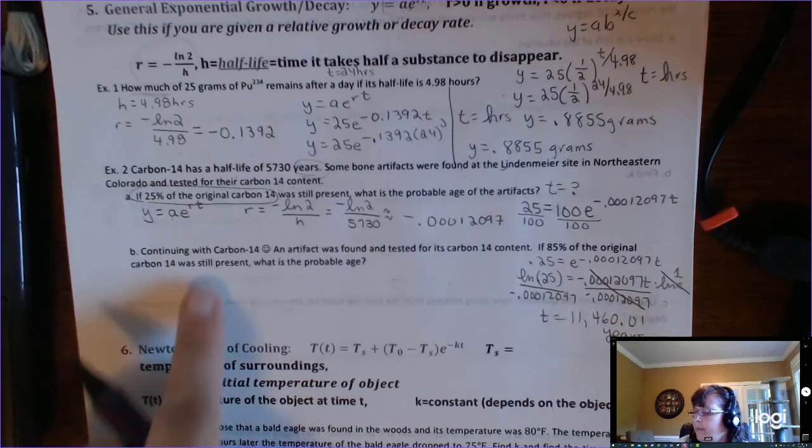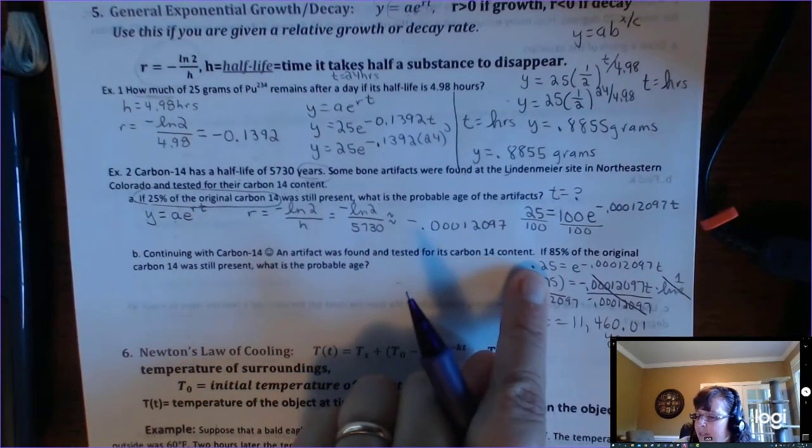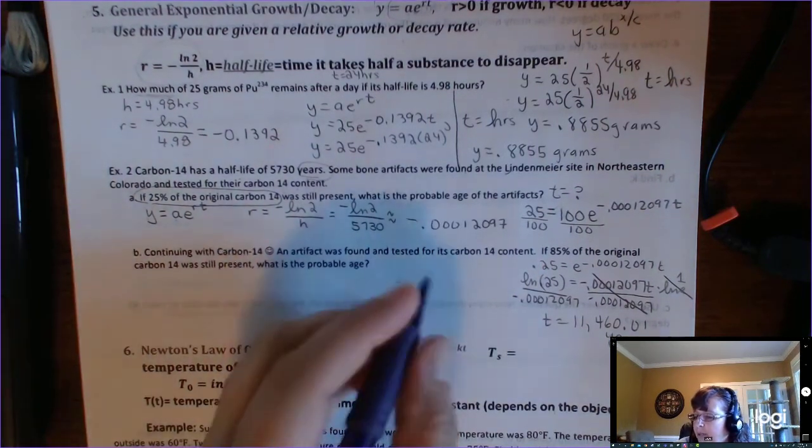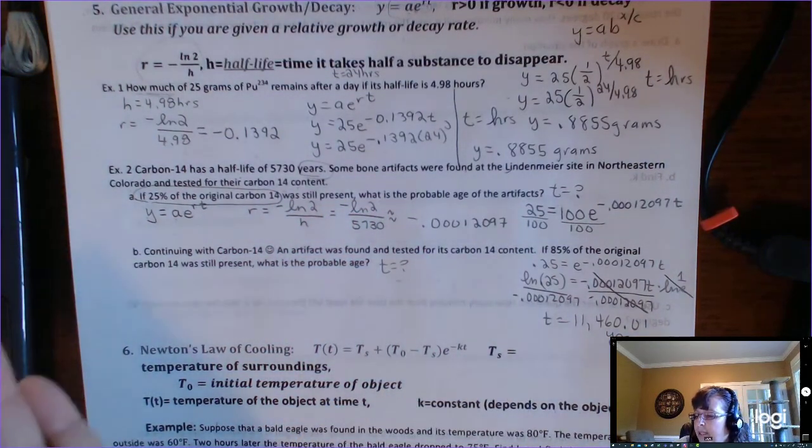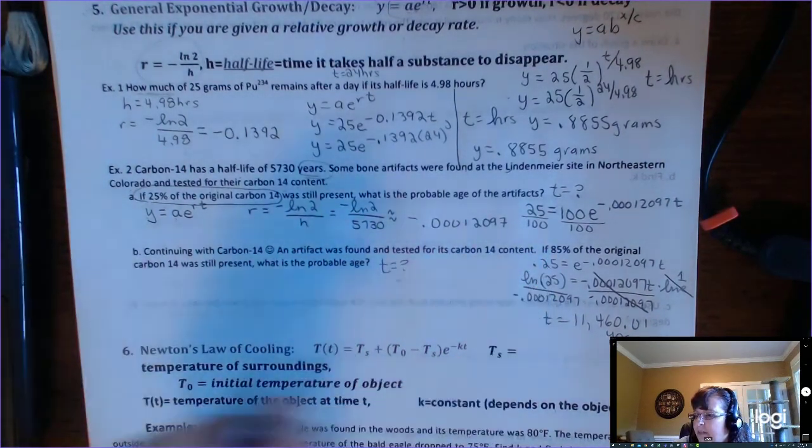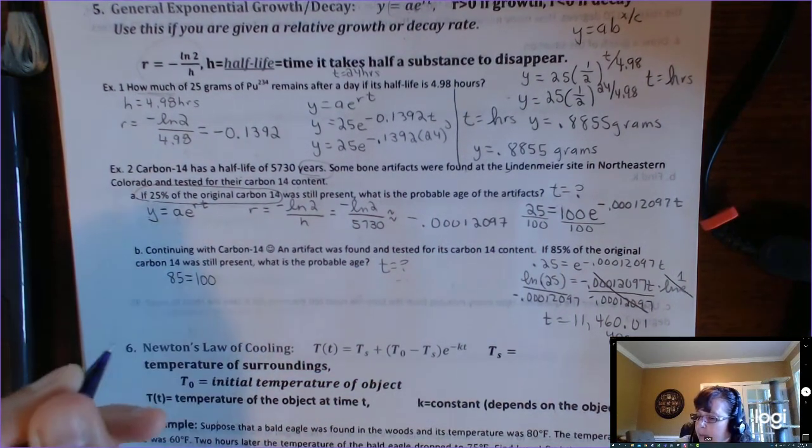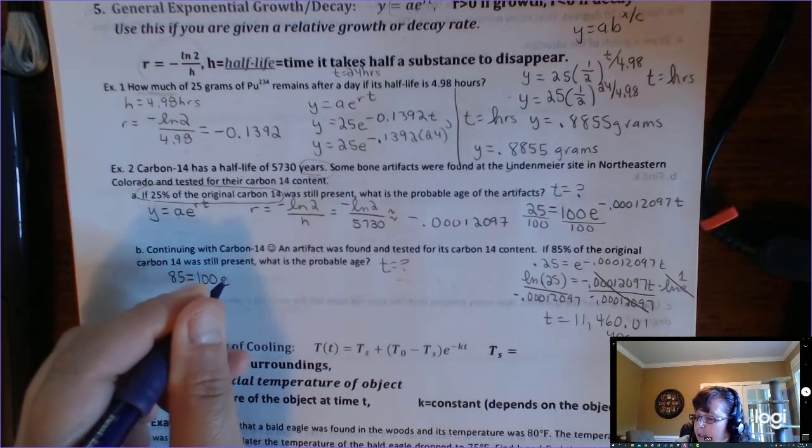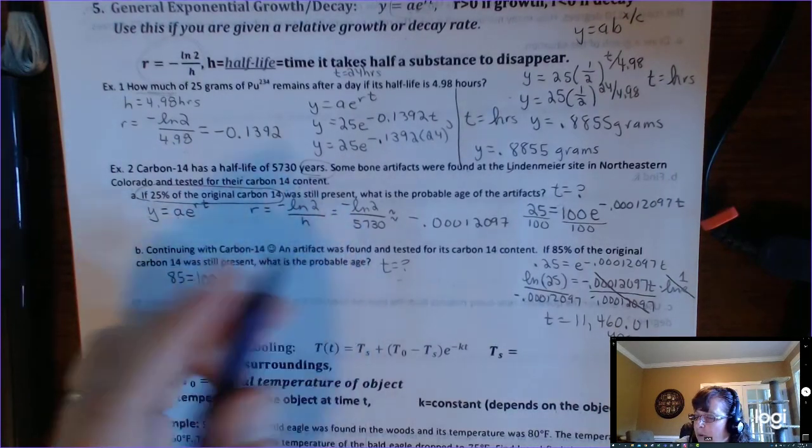Okay, same element. Continuing with carbon-14, an artifact was found and tested for its carbon-14 content. This time it says if 85% of the original was still present. What was the probable age? So we're still looking for t. What do we do when we don't know the ending or the beginning? We can make stuff up. So let's let A be 100. That means that the final amount would be 85 if 85% was left.